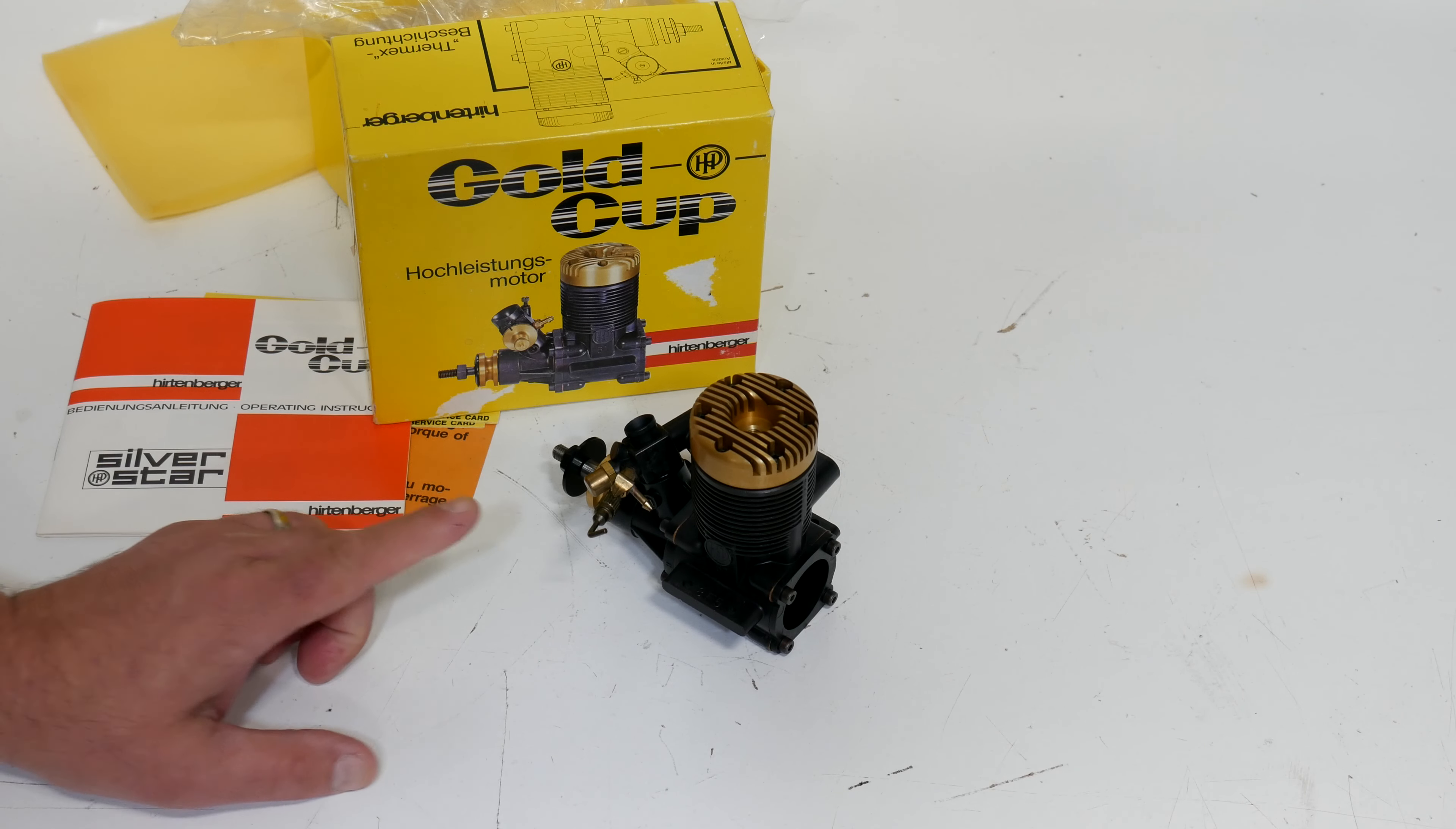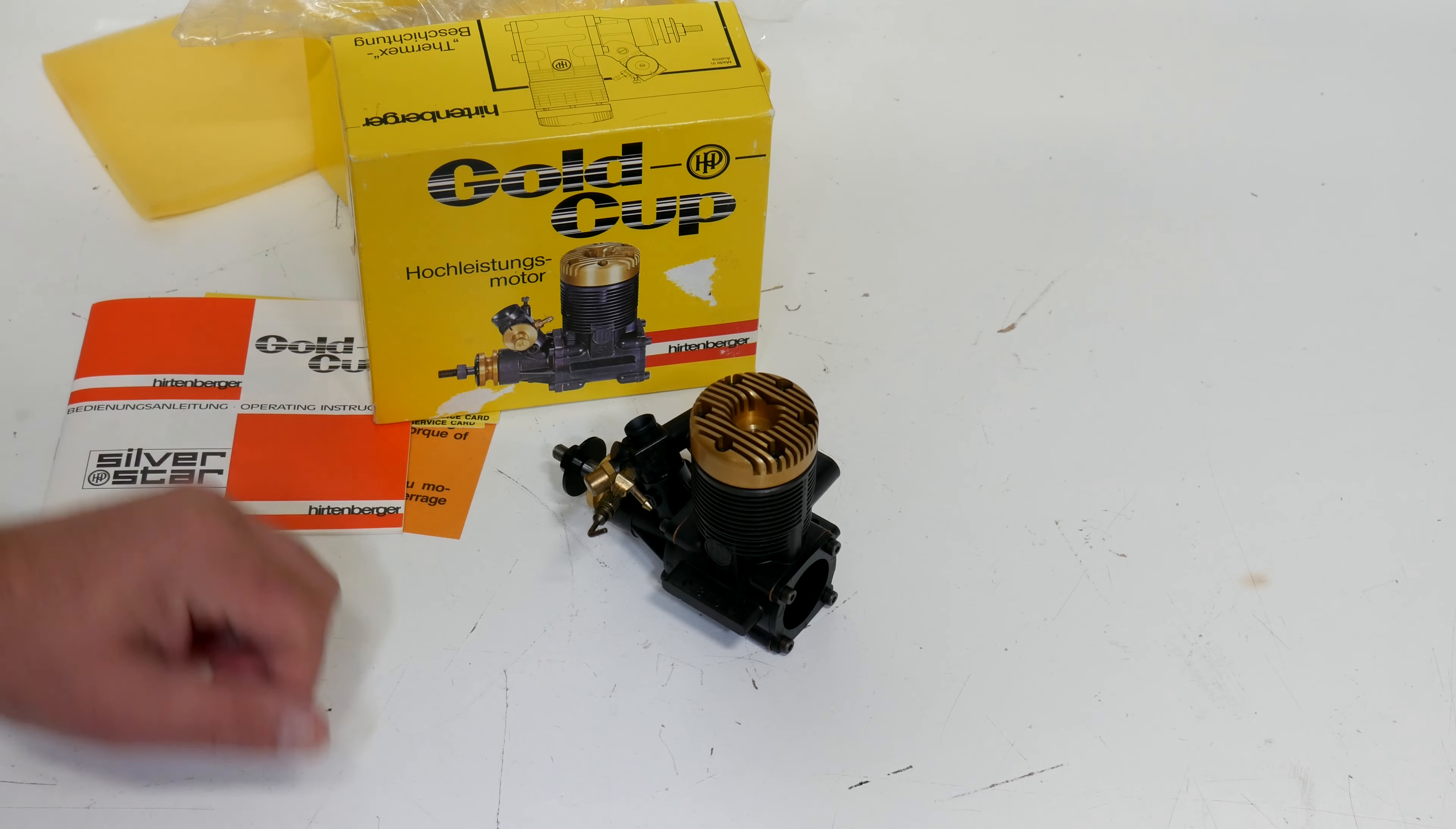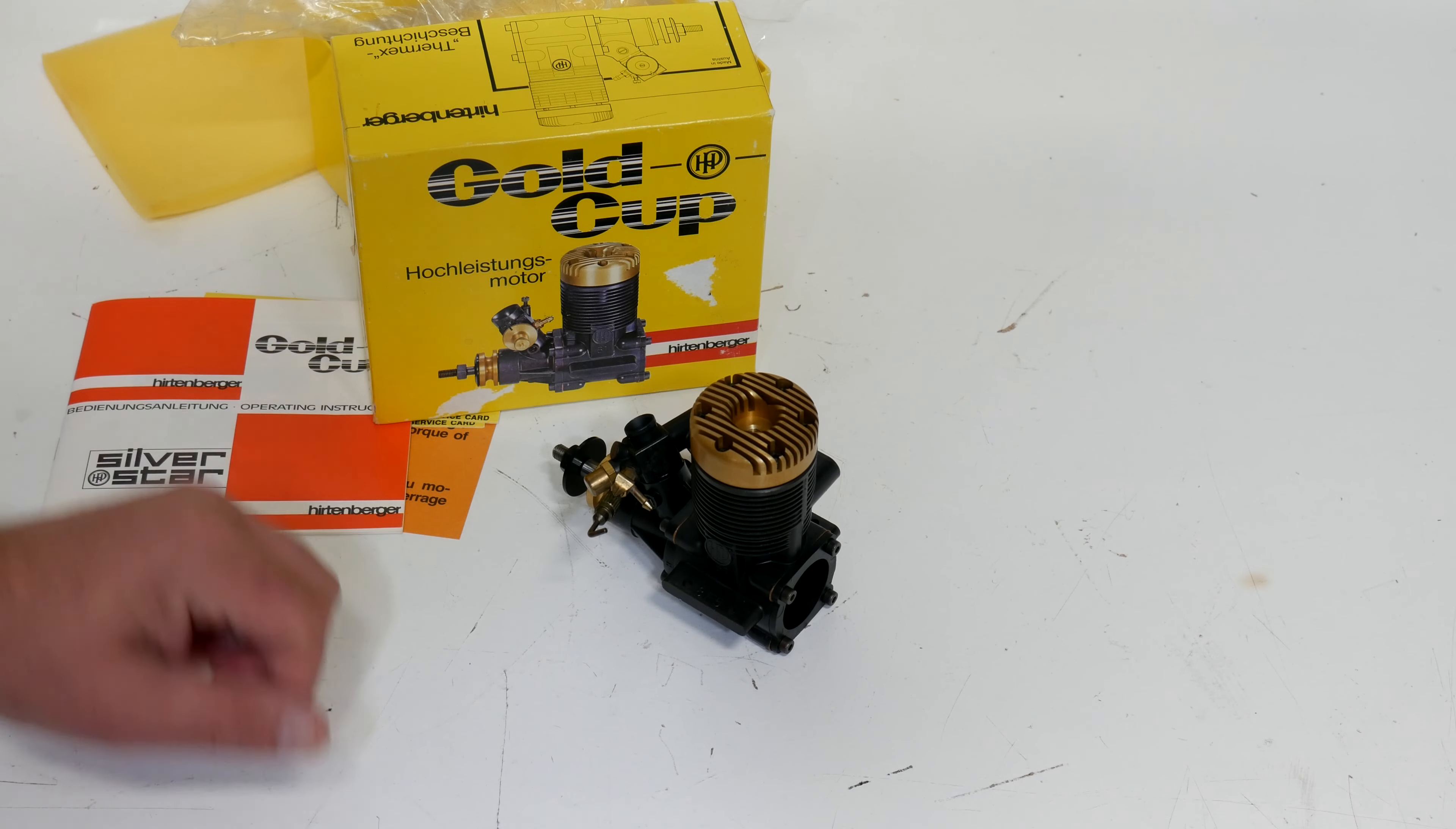This is going to be going, like I said, on that vintage Chaos that I have, and we'll do a video on that, getting that installed in the Chaos. It should be pretty easy because that plane already had the HP 61 in it, so I won't have to re-drill any holes or do anything like that. Next video should be this being installed in the Chaos. We'll do some test runs, breaking in on this and getting it ready to fly. And hopefully before it gets too cold outside we can take the plane out for a nice fly. Appreciate you guys joining me on this little unboxing adventure on the Gold Cup 61.